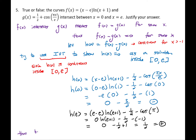Thus by the Intermediate Value Theorem, h(x)=0 has a solution inside the interval from 0 to e. The key things: one endpoint must be positive and the other negative, the function must be continuous inside the interval, and somewhere in your solution you must say 'Intermediate Value Theorem' — that's what gives us the ability to make the conclusion.